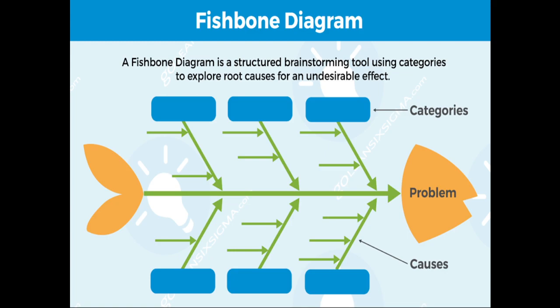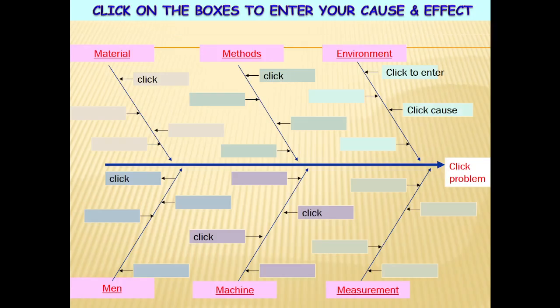In the head part of the fish you need to write down the problem, and in the fishbone parts you need to fill in the categories and the possible major and minor causes against each category. Another empty format is also provided where you can fill in the relevant information in the boxes given in the fishbone diagram. Save this slide for filling in important information.